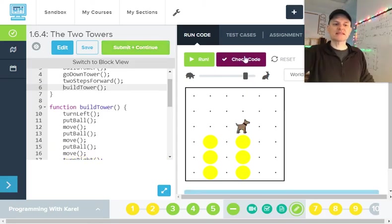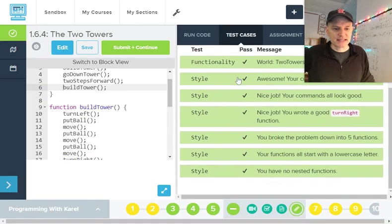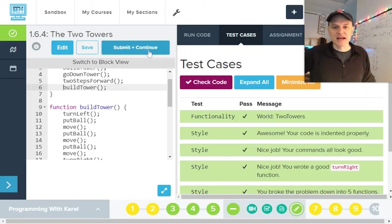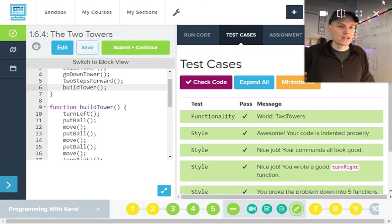Good. So I'm going to click this test, check code button to see my test cases. Yeah. And they're all green. That's a good place to be. I can click submit and continue. And good luck coding on your own.